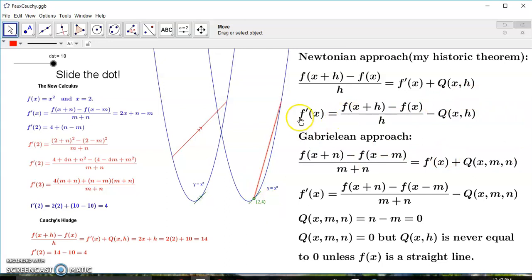And therefore, we could redefine the derivative as the slope minus the difference. Now, in the new calculus, you don't have a problem because whether you minus the difference or you add it, it's always zero.